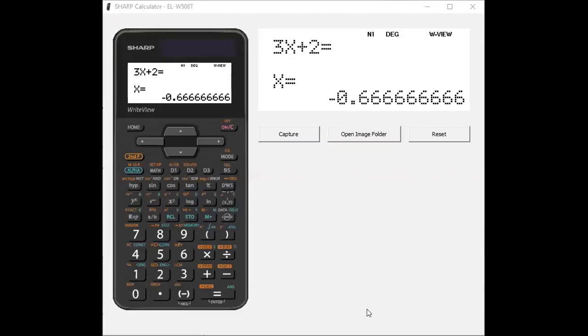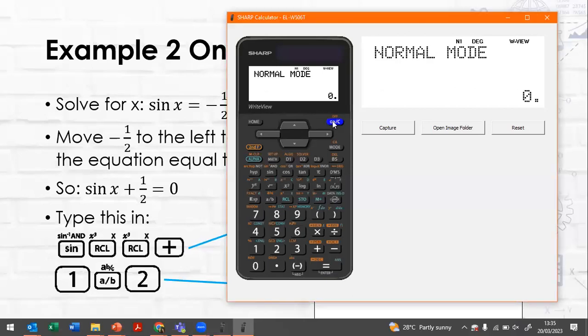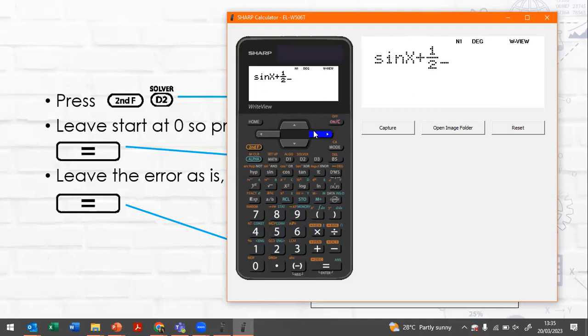Right, so what we're going to do is press on twice and then say sine, again rcl rcl to make an x, plus a half which is just one and then a fraction button and then two. I've just pressed the rise arrow key so that you can see what it looks like nicely.